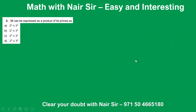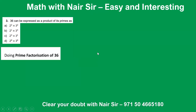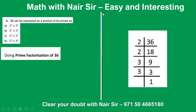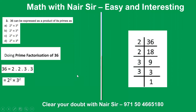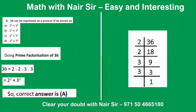Third question: 36 can be expressed as a product of its primes. Very simple — just factorize 36. Draw a line on the right-hand side for rough work. I can write 36 as 2 × 2 × 3 × 3, which can be written as 2² × 3². The answer is A.